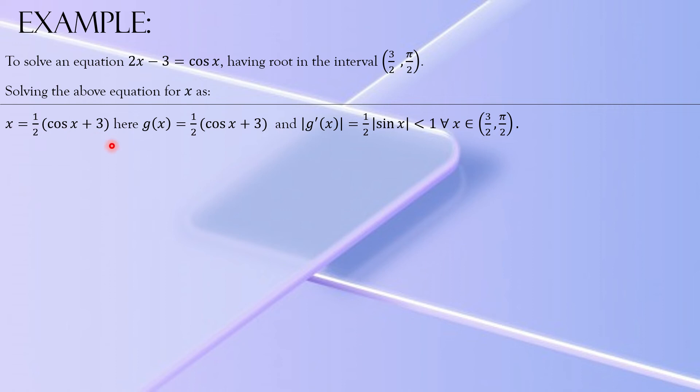We are using x = 1/2(cos(x) + 3), and in this case obviously g(x) would be 1/2(cos(x) + 3), and if you differentiate this function its derivative would be -1/2·sin(x).